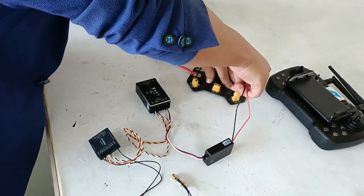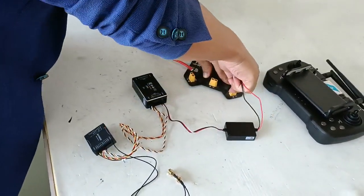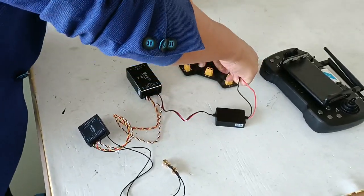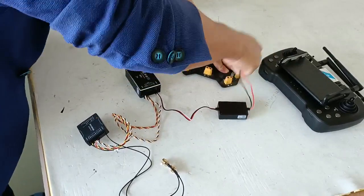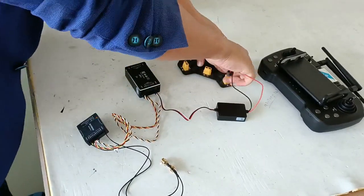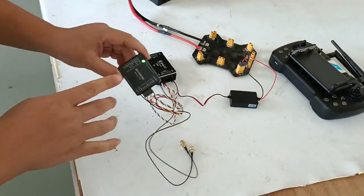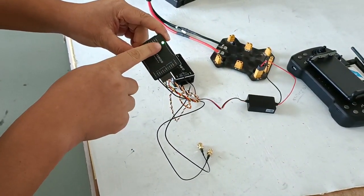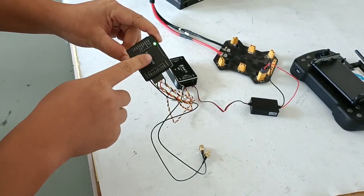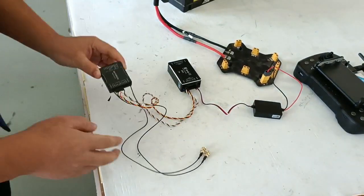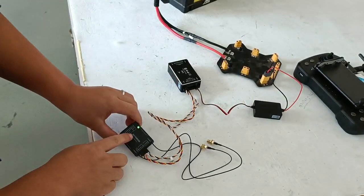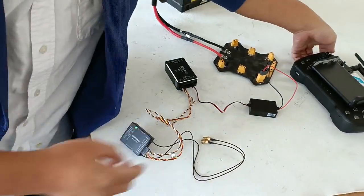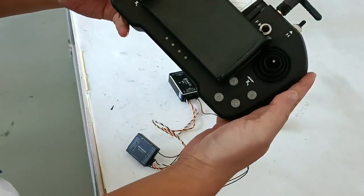One, two, three, four, five, six. Now you can see after the sixth time, the light on the SkyDroid started to flash green. This means the SkyDroid is ready to match. Now we turn on the remote control.